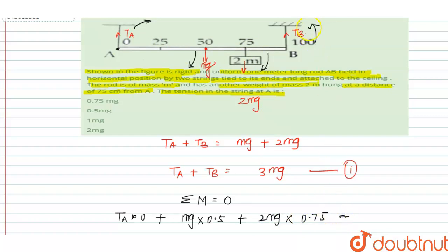Minus, because moment due to Tb is in opposite direction to Mg and 2Mg. This is negative Tb times 1 meter, and this equals 0.